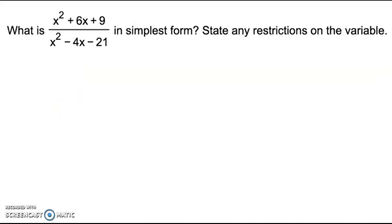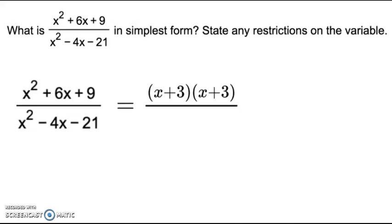To write this in simplest form, I'm going to have to factor the top and the bottom. Factoring the numerator, the numbers that multiply to 9 but add up to 6 are 3 and 3. So x plus 3 times x plus 3.